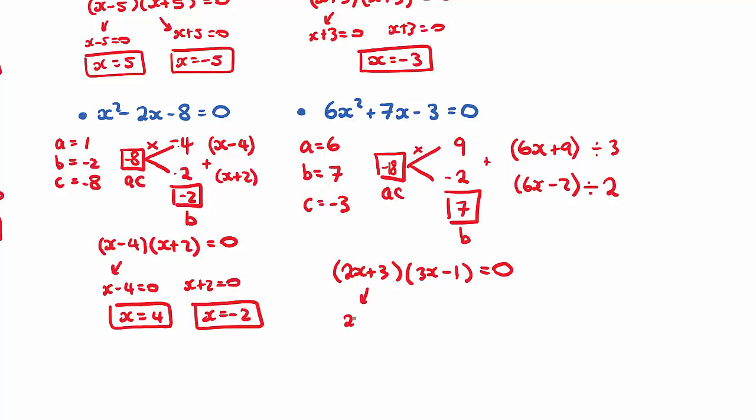Now from here, we can just use the null factor law to say 2x plus 3 must equal 0, and 3x minus 1 must equal 0. 2x is equal to negative 3, and therefore, x is equal to negative 3 on 2, that first solution, or 3x is equal to 1, and x is equal to 1 third.